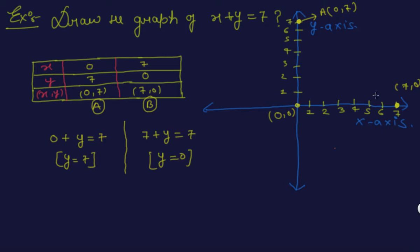Now I am plotting the graph of the linear equation x plus y equal to 7. Basically, connect point A and point B — start with A and end with B. This gives a straight line. So I hope you understand this example.